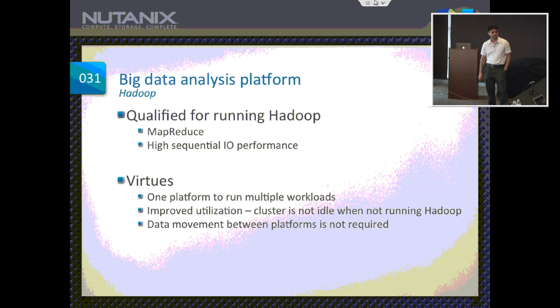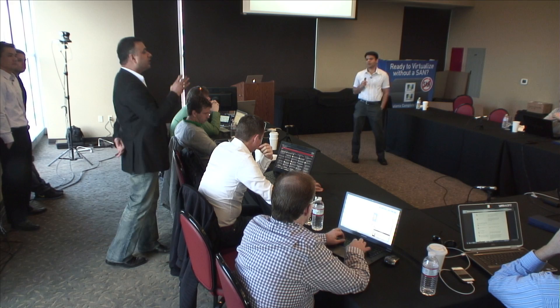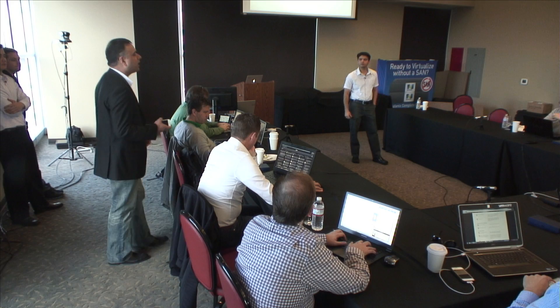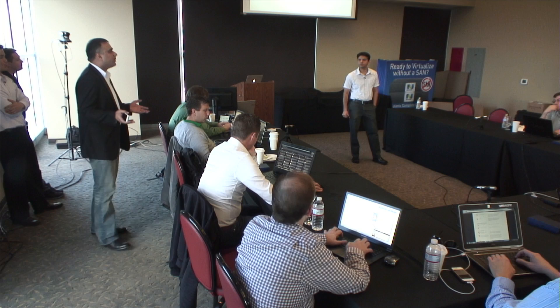Regarding which Hadoop distribution we work with: for production we work with Cloudera. Internally we have also been successful with MapR, but not yet in production. MapR's claim to fame is making Hadoop enterprise-grade with snapshots, but we can do snapshots plus 50 other things — clones, backup, DR — which come out of the box, so you don't need MapR.